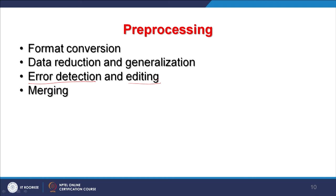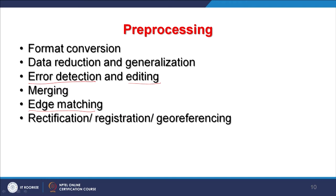Merging is another preprocessing step — if two adjacent toposheets need to be joined, that is merging, though in raster data merging has a different meaning. Edge matching may be needed when two adjacent datasets don't match perfectly at boundaries due to projection issues, sometimes requiring manual edge matching. Rectification, registration, and georeferencing have already been covered in detail in approximately an hour of prior discussion. Interpolation, which prepares continuous data from discrete point data, also comes under preprocessing.